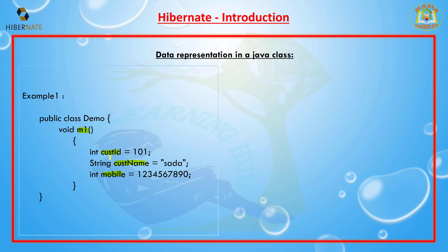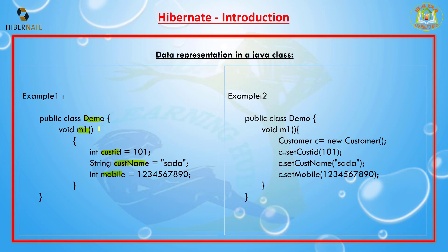In object format, data is stored in an object. The m1 method of the demo class stores customer data as an object 'c' of type Customer, holding customer ID, customer name, and mobile number. Both text format and object format represent persistent data, which we can store in the back end.